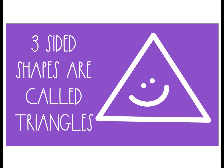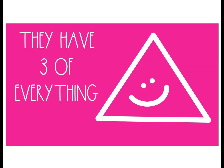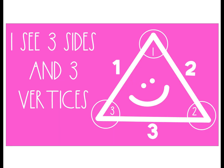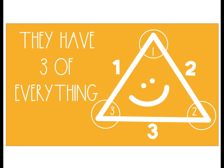Three-sided shapes are called triangles. They have three of everything. I see three sides and three vertices — they have three of everything.